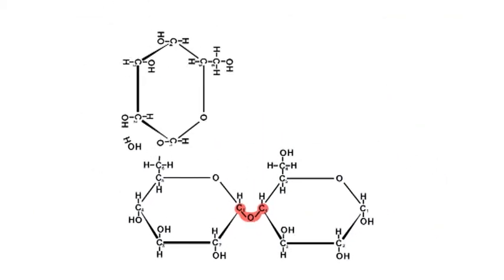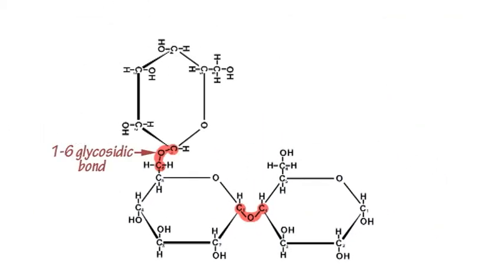Glycosidic bonds can form between other carbon atoms, forming polysaccharides out of long branching chains of glucose molecules linked by glycosidic bonds.